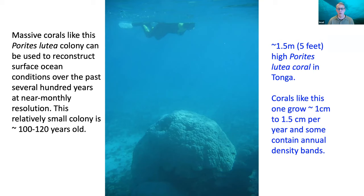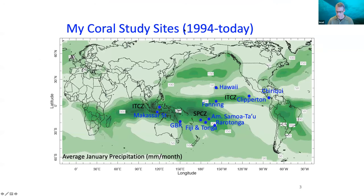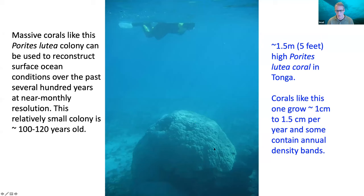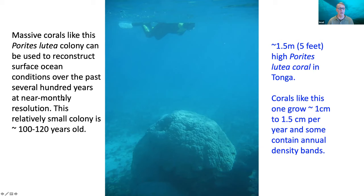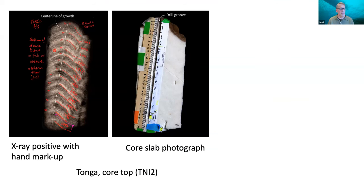This coral in front of you is a Porites lutea colony from Tonga, about a meter and a half high. They grow about one to one-and-a-half centimeters per year, so this coral is approximately 100 to 120 years old. Corals like this are only alive on the outer edge — a skin about a centimeter thick — with bone skeleton underneath. Sometimes we sample them with a drill: we drill down the middle, take a core out, then plug the hole to facilitate healing. This is why that's so interesting — we can get near-monthly resolved climate records out of corals like this because they grow about a centimeter a year and have annual rings, much like trees.